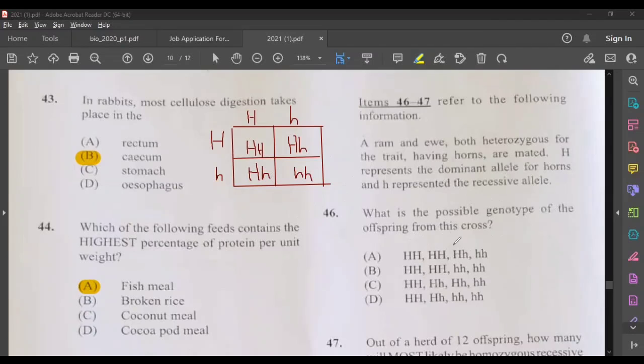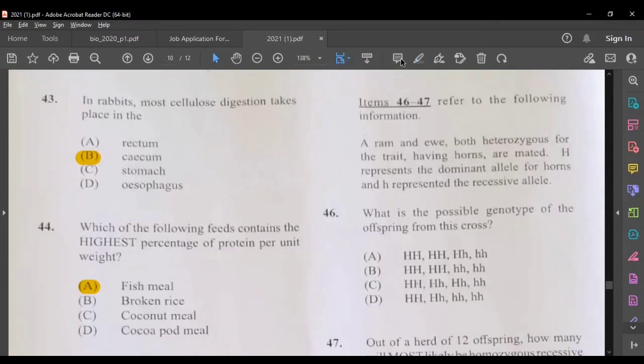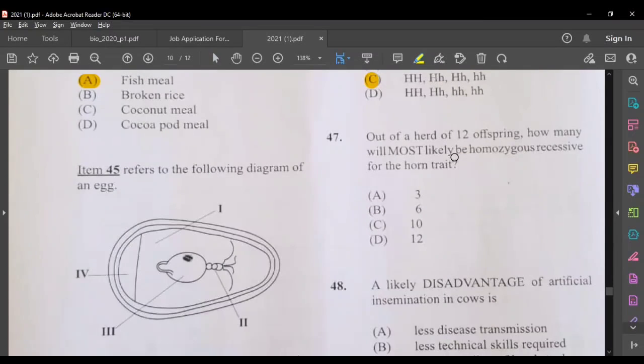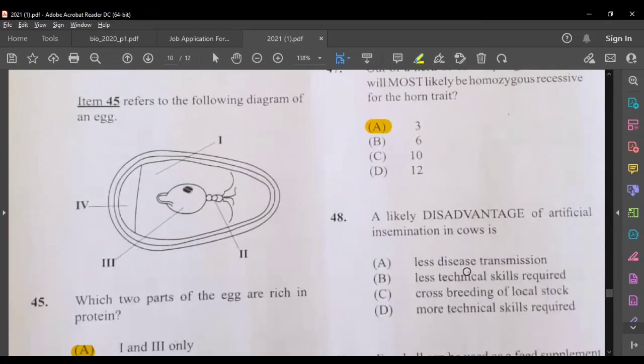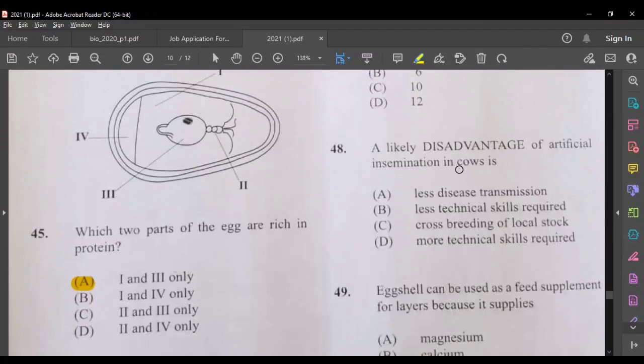What is the possible genotype of the offspring from this cross? C would be our correct answer based on what we just worked out. Out of a herd of 12 offsprings, how many will most likely be homozygous recessive for the horn trait? Out of four, one of them was homozygous recessive. So four goes into 12, so the answer would be A, 3.